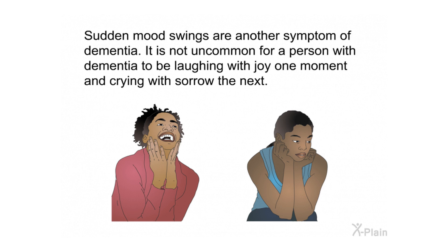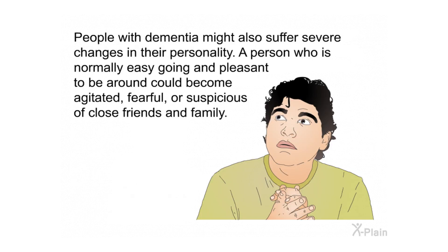Sudden mood swings are another symptom of dementia. It is not uncommon for a person with dementia to be laughing with joy one moment and crying with sorrow the next. People with dementia might also suffer severe changes in their personality — a person who is normally easygoing and pleasant could become agitated, fearful, or suspicious of close friends and family.